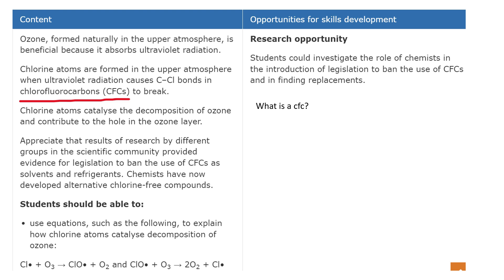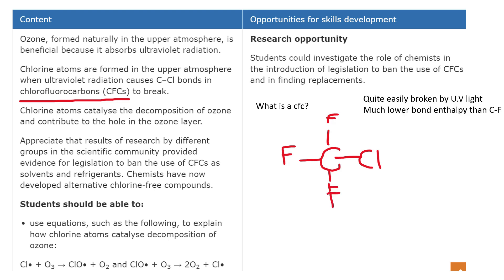Carbon-chlorine bonds are actually quite reactive. They have a low bond enthalpy and they can be broken in the upper regions of the atmosphere by ultraviolet light. The carbon-fluorine bonds, however, are very strong — they have a high bond enthalpy and they're not broken by UV light. So the major problem, highlighted here in green, is the carbon-chlorine bond.